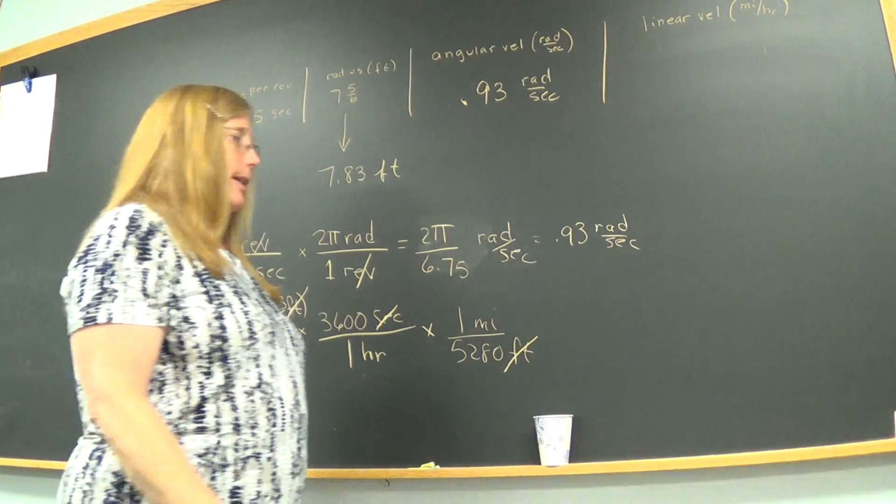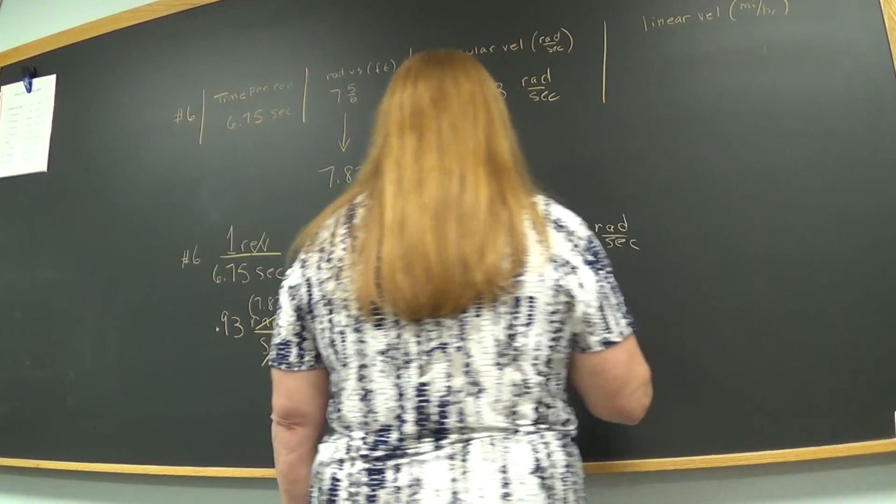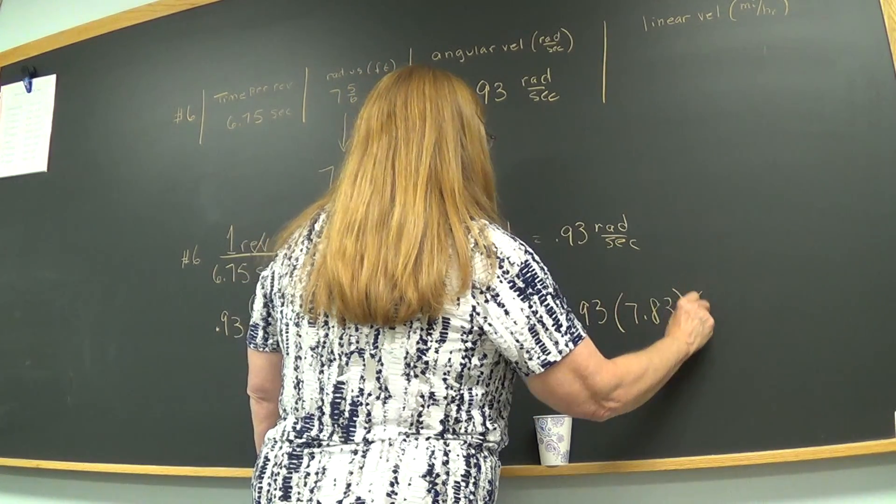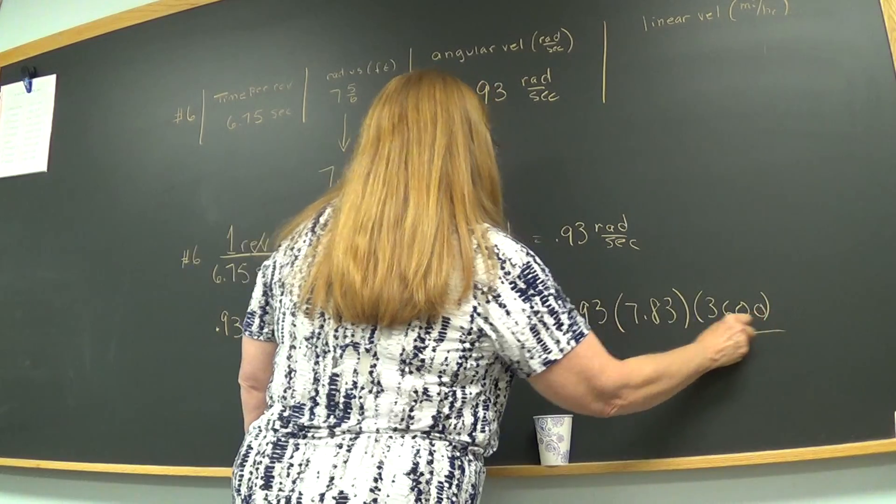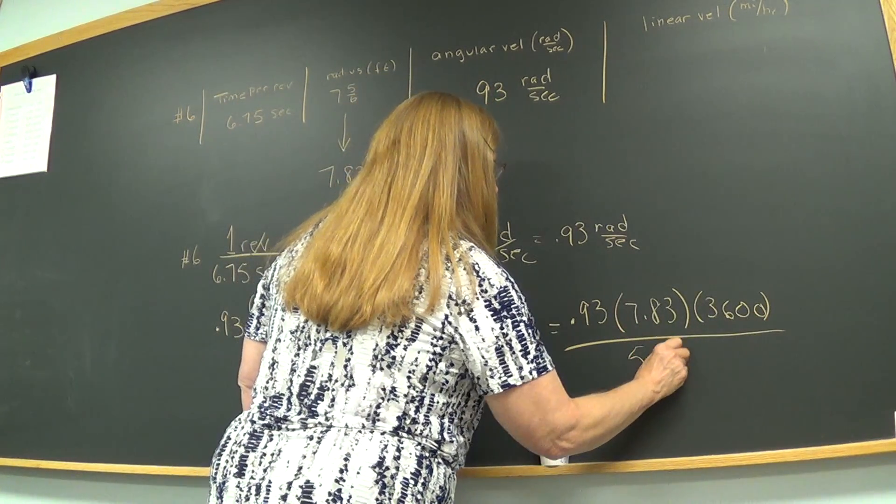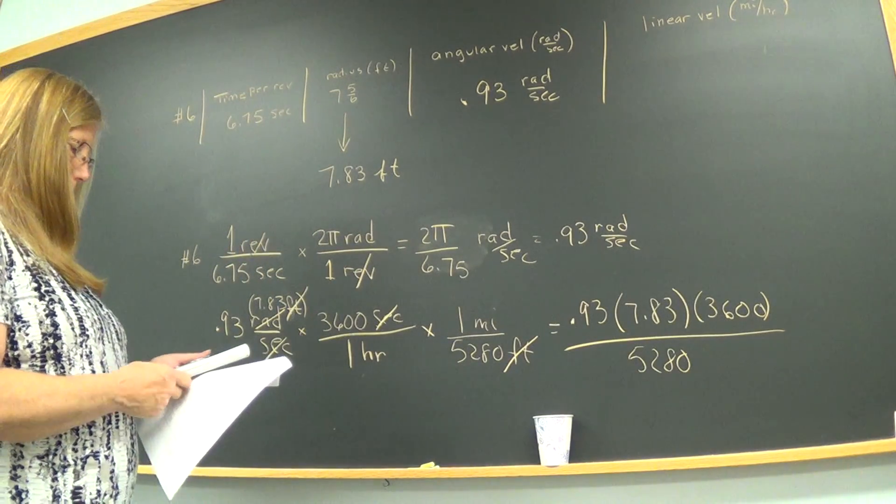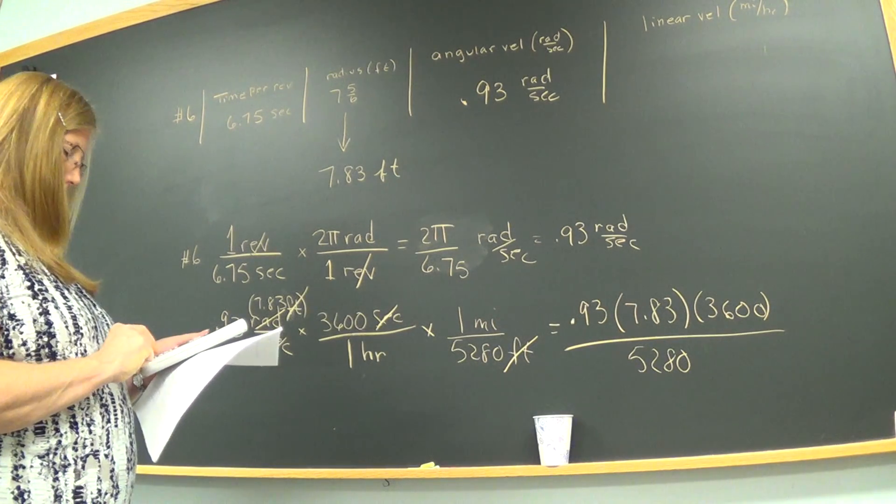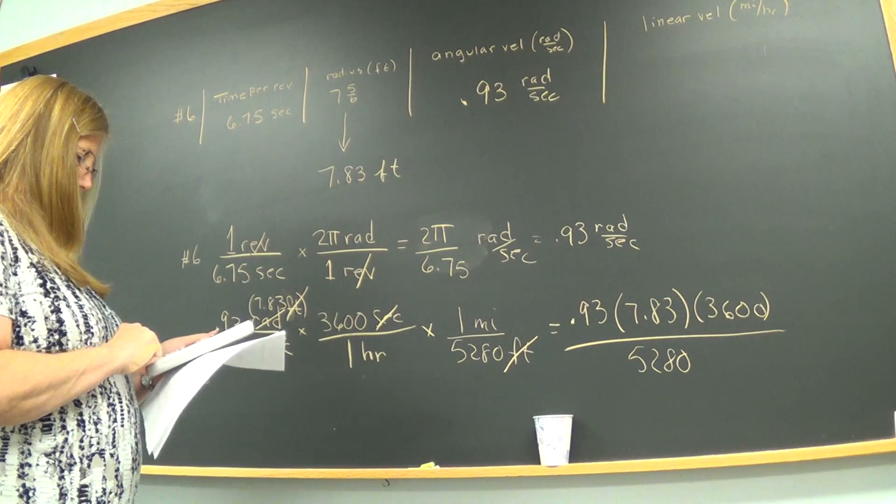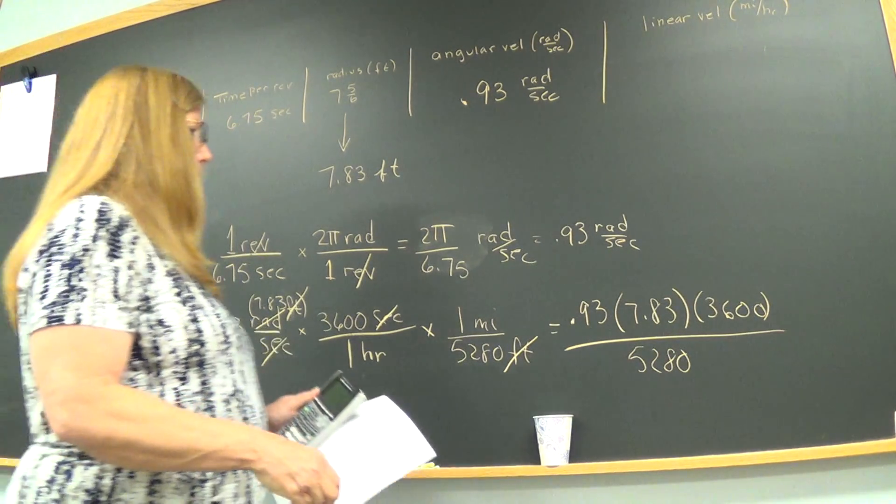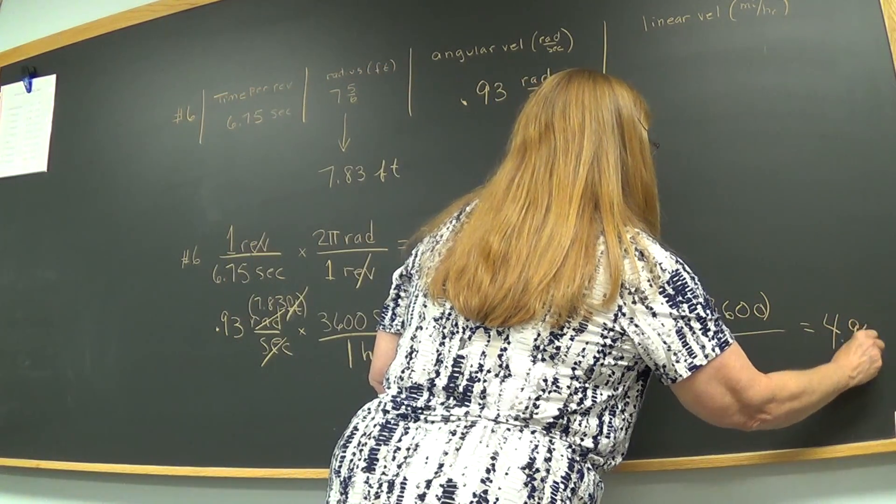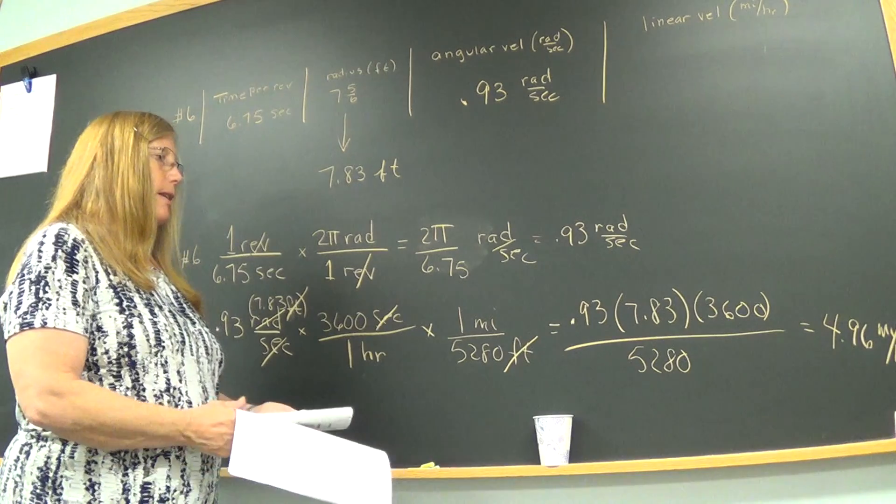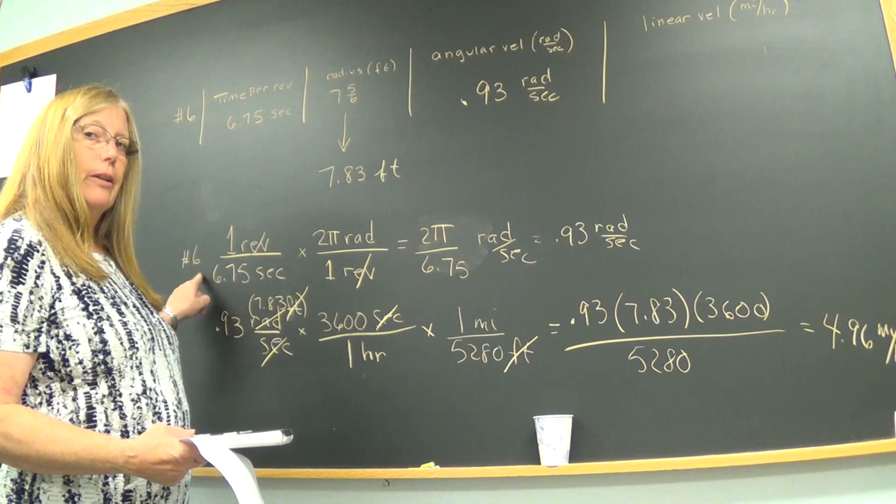So what's left? I have all these numbers. 0.93, 7.83, 3600. And all that is divided by 5,280. So let me tap that out. Alright, almost 5. It is 4.96 and that is miles per hour. So almost 5 miles per hour going around. That is what person number 6 was traveling on the outside of that path, the circular path. 4.96 miles per hour.